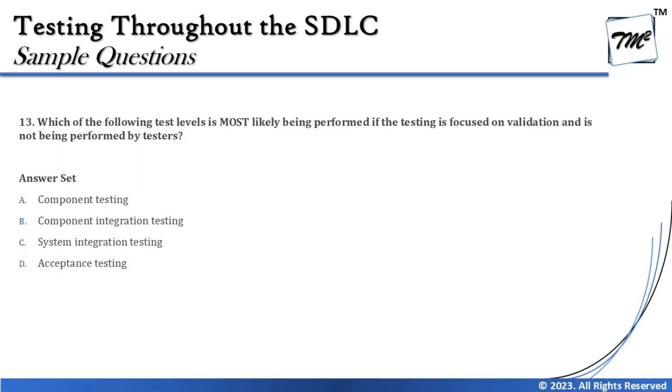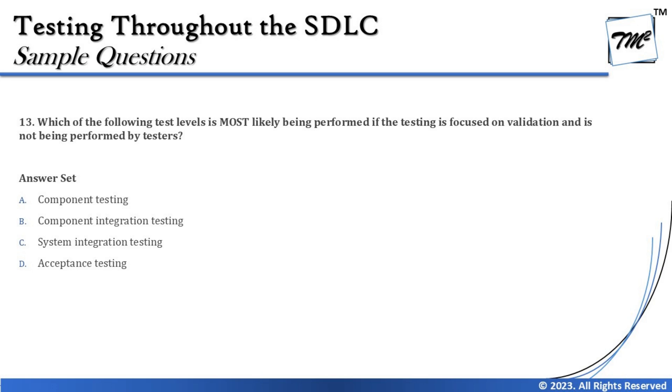The next question is number 13: which of the following test levels is most likely being performed if the testing is focused on validation and is not being performed by the testers? A very simple context to recall here — validation is where we perform dynamic testing. We have four test levels covered in our syllabus: component testing, integration testing, system testing, and acceptance testing. Component, integration, and system testing are done by internal testers, whereas acceptance testing is done by the business. That's exactly what this question is asking.